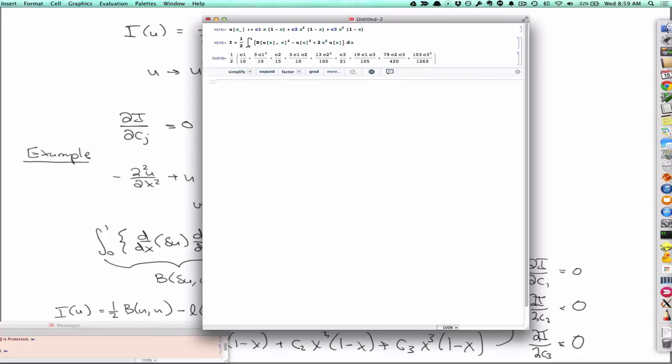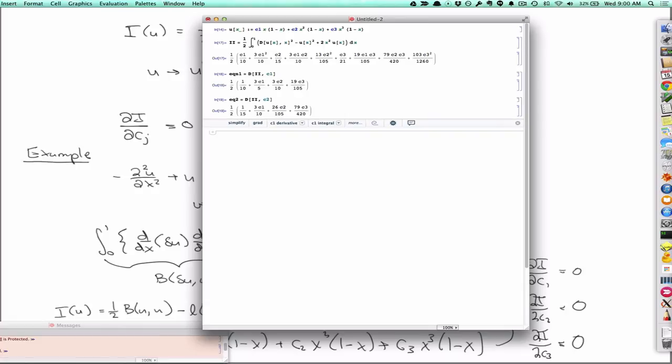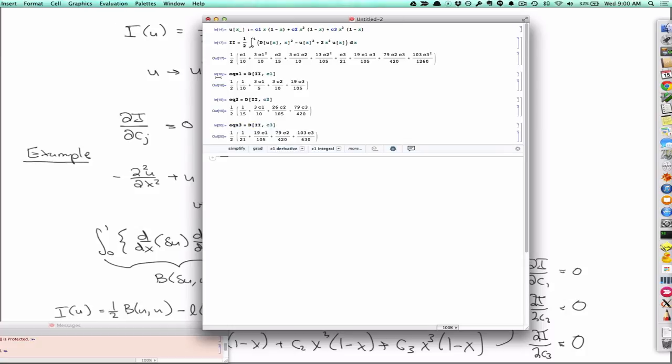And so now we should just be able to say equation one is partial of i with respect to c_1. I think I need to give that a different symbol because i is an imaginary number. There we go. Equation two is partial with respect to c_2. Equation three is partial with respect to c_3. Alright, so now I have three equations that I can solve simultaneously.